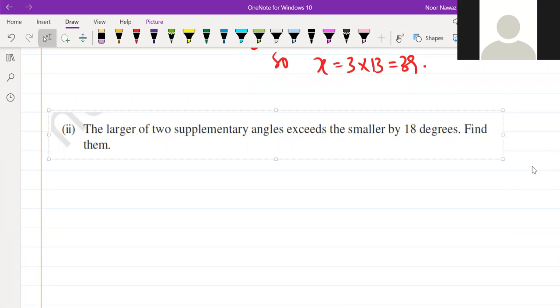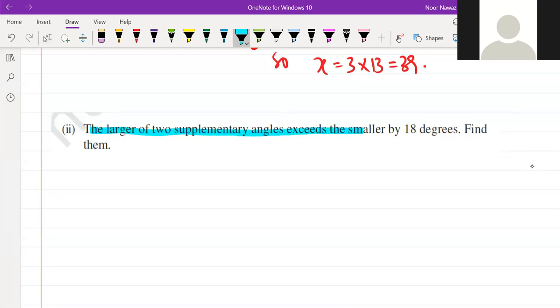The larger of two supplementary angles. Here we are given, it will exceed the smaller by 18 degrees. So the larger and smaller difference is 18. But the special thing is that they are supplementary angles, so their sum is 180. Very good.